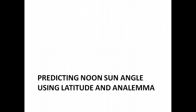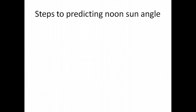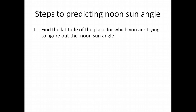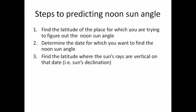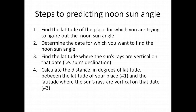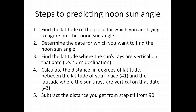To figure out the noon sun angle at any given latitude, follow these steps: First, find the latitude of the place you're calculating for. Second, identify the date you're interested in. Third, find what latitude the sun's rays are vertical on that date. Fourth, calculate the distance in degrees of latitude between your location and where the sun's rays are vertical. Finally, subtract that distance from 90 — and that gives you the angle of the sun above the horizon.